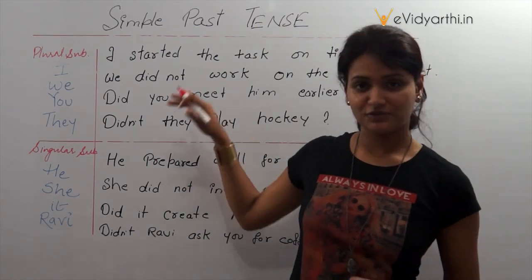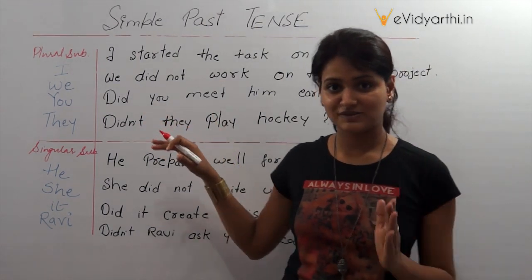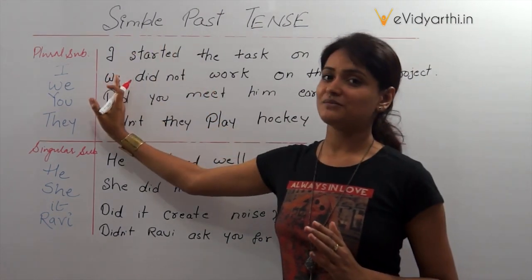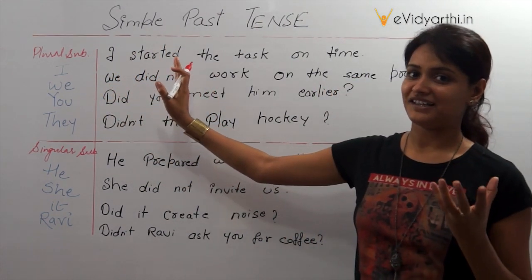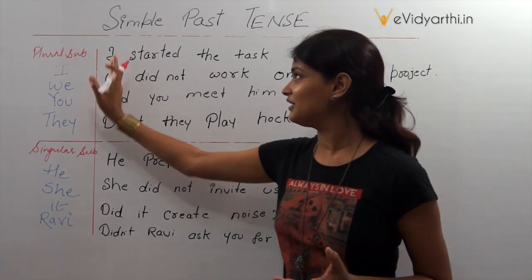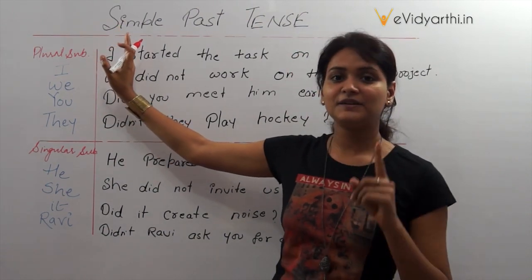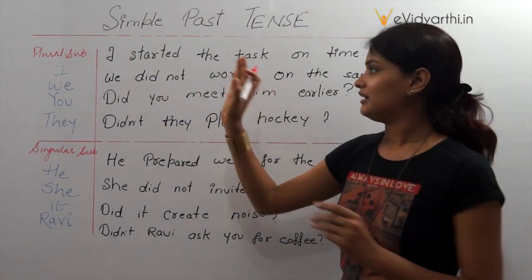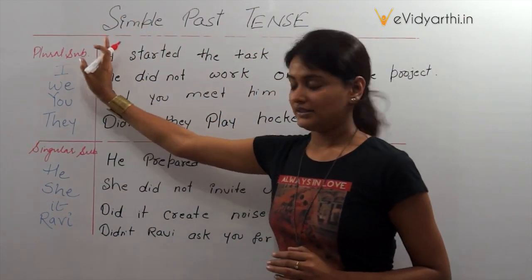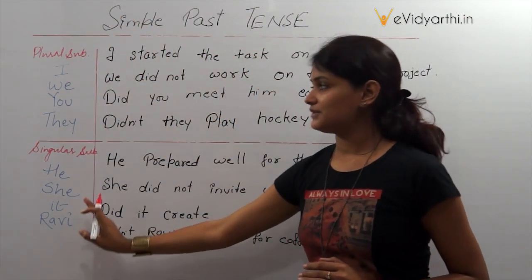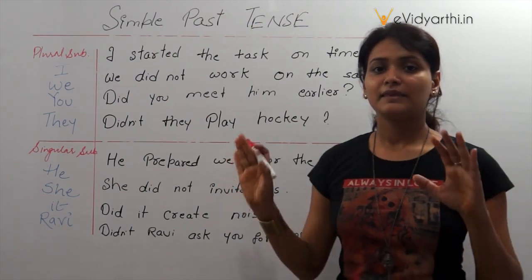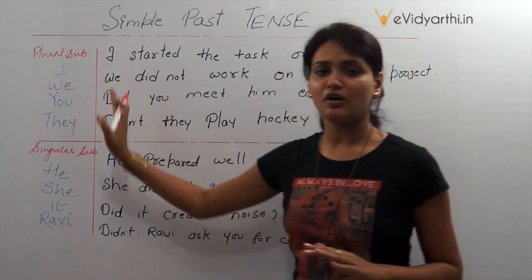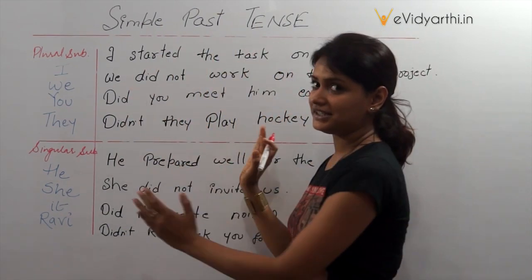Going towards the construction of the sentences of simple past tense — as we all know, the subject is what we explain in the whole sentence. So the first place in a sentence is the subject: plural subject and singular subject. In simple past tense there are no different rules for plural or singular, so we are going to take it as a whole.